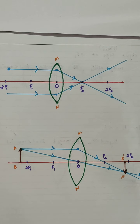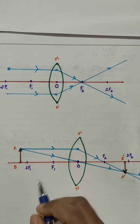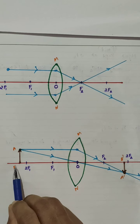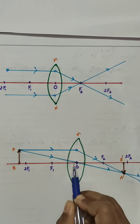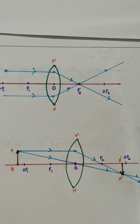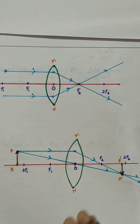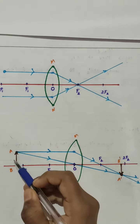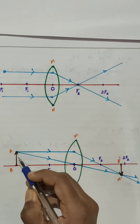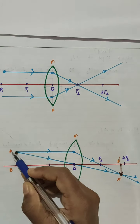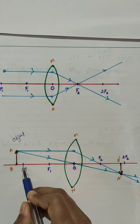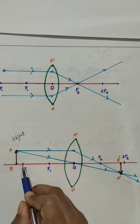Now we are changing the position of the object. I am keeping the object beyond 2F1. A convex lens is here with optical center, F1, 2F1, F2, and 2F2 all marked. I have placed object AB here — it is not at infinity but beyond 2F1.